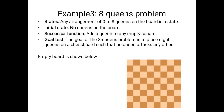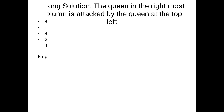The successor function for the eight queens problem is to add one queen at a time to any empty square, observing the constraint conditions at each step. Our goal is to place all eight queens on the board. The goal of the eight queens problem is to place eight queens on a chess board such that no queens attack any other.